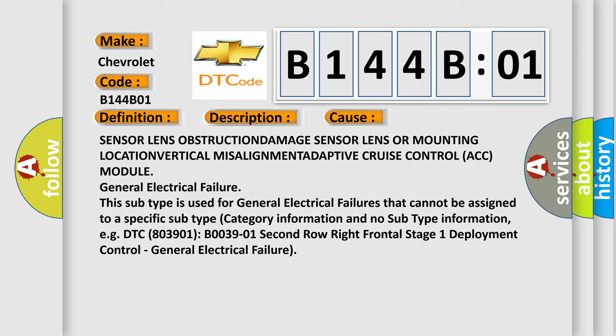This subtype is used for general electrical failures that cannot be assigned to a specific subtype category. Information and no subtype information, e.g. DTC 803901 B03901 2nd row right frontal stage 1 deployment control, general electrical failure.